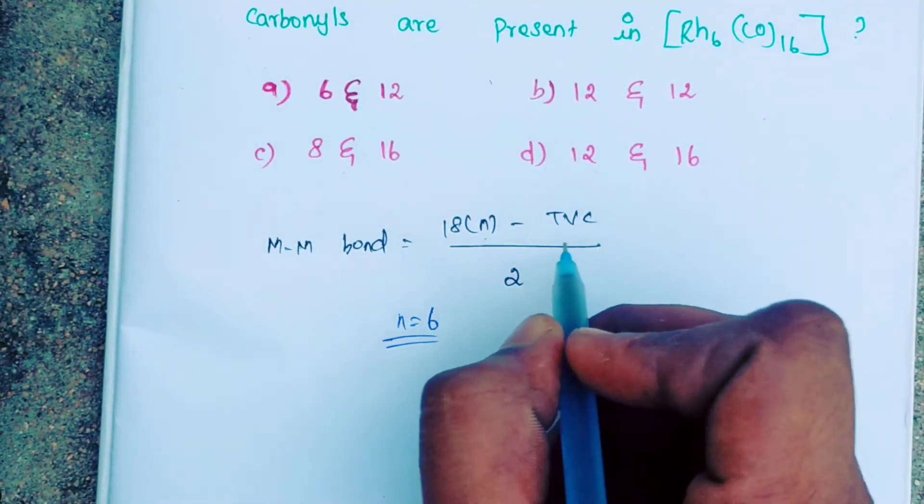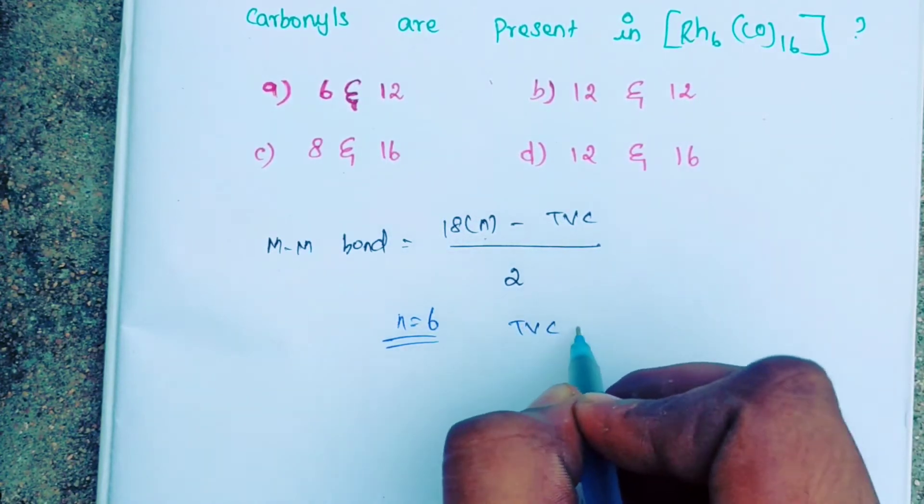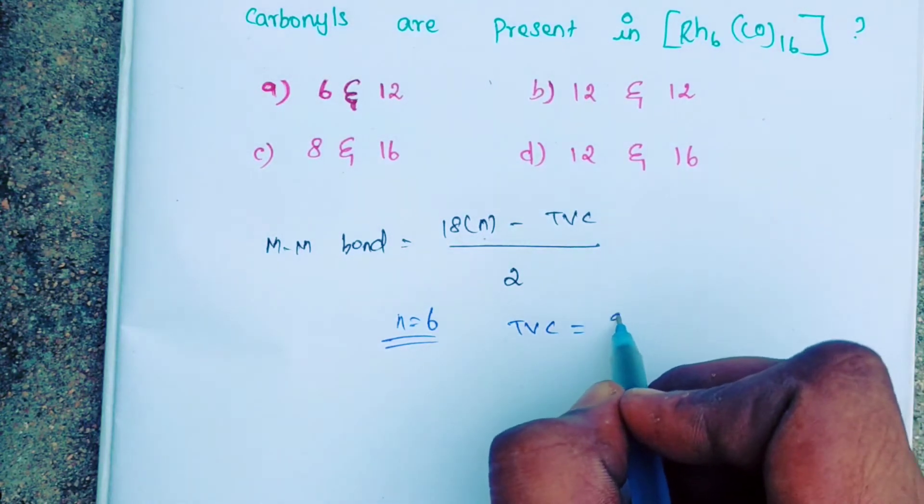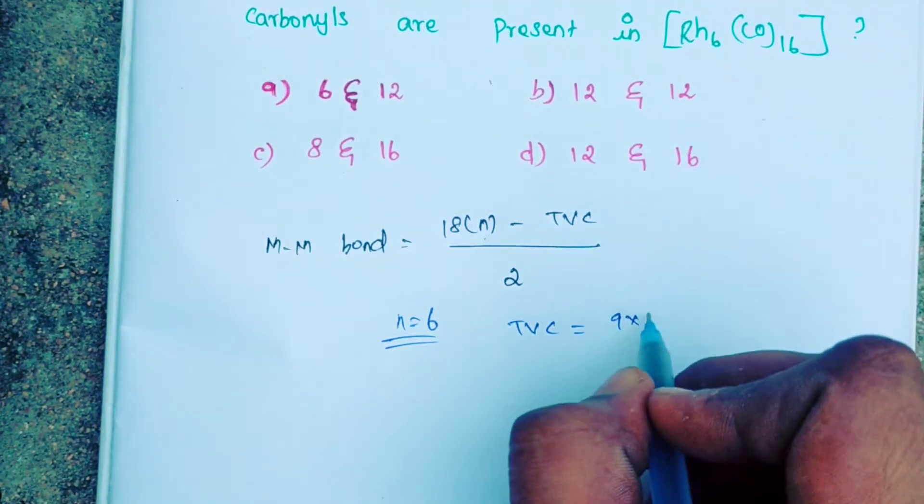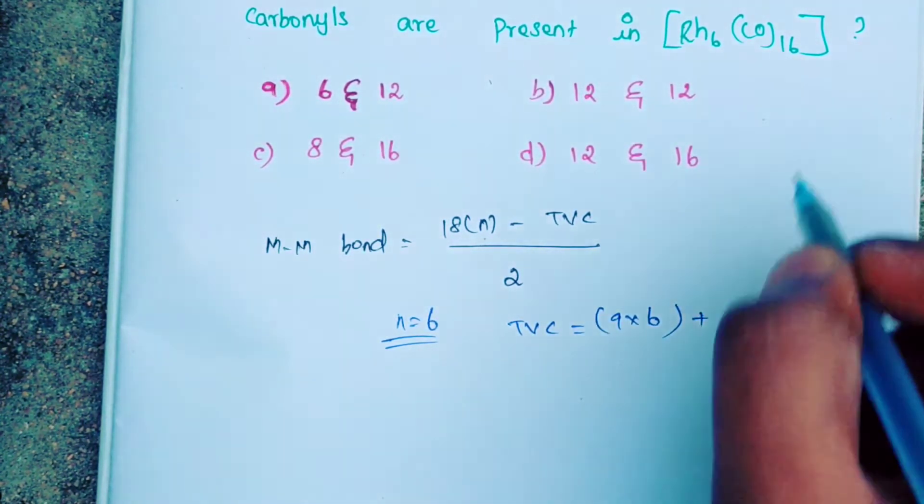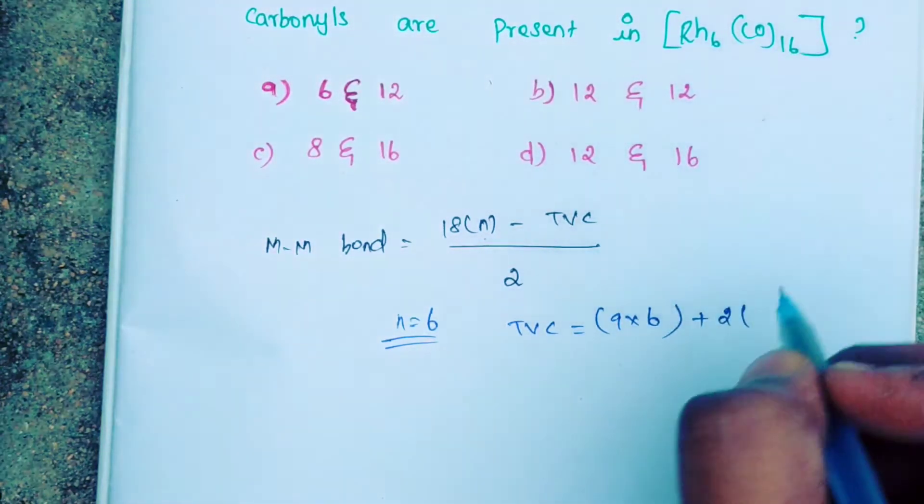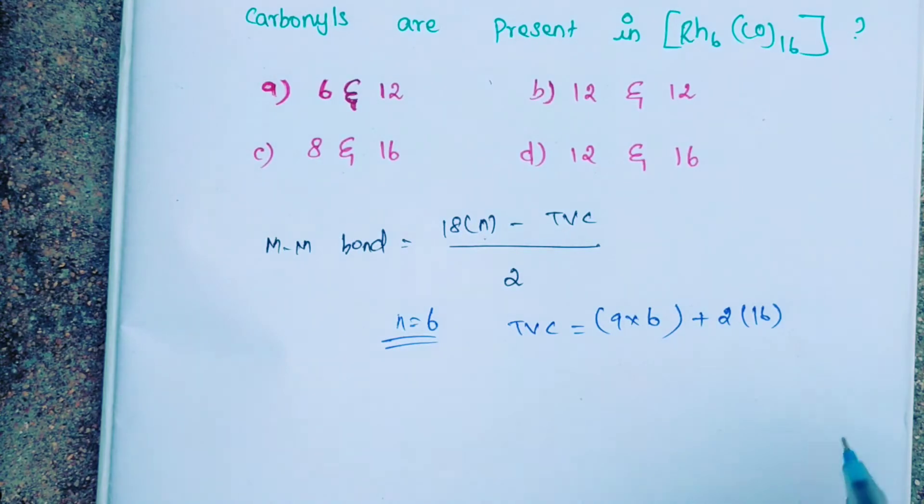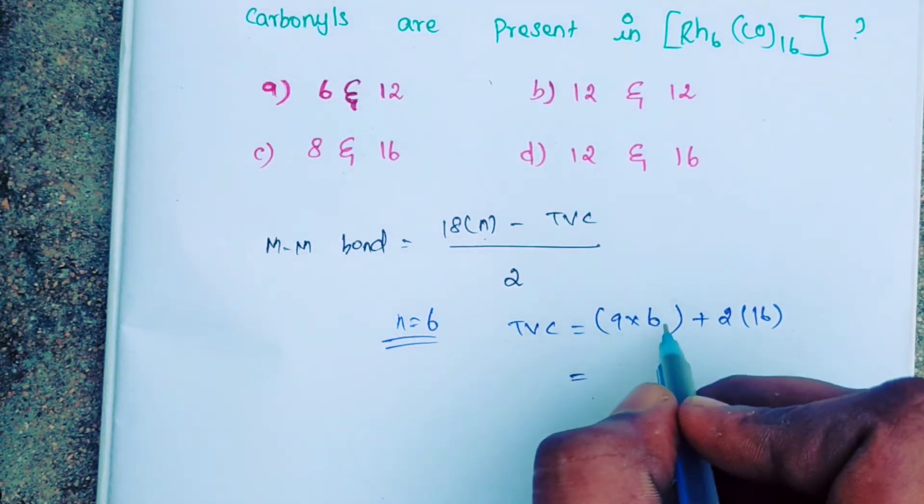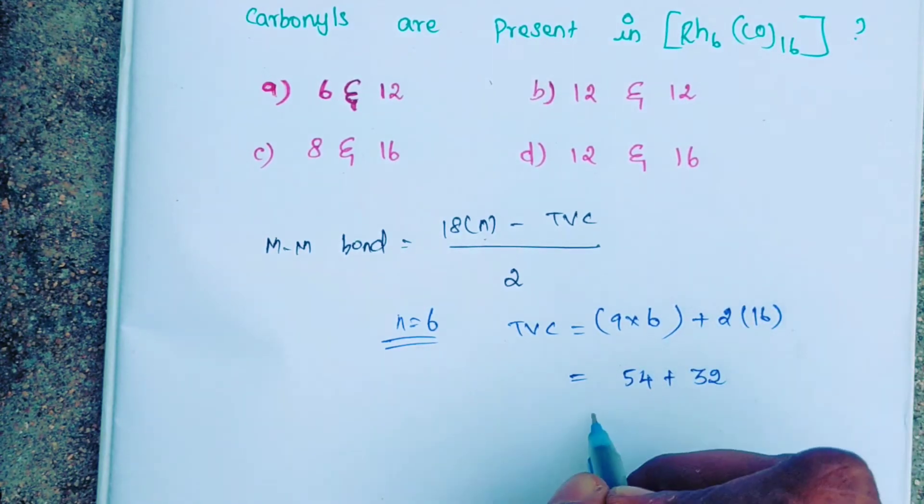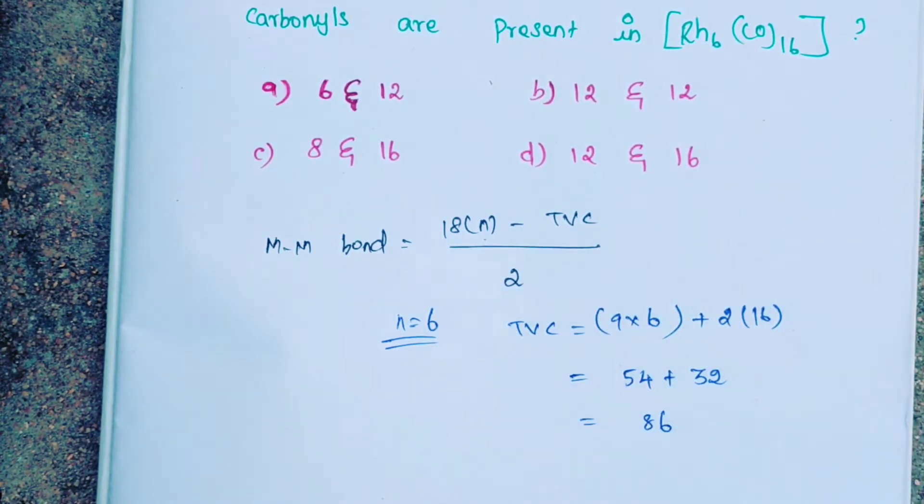Next, we find the total valence electron count. Rhodium's valence electron is 9, and the number of rhodium is 6. CO is a 2-electron donor, and there are 16 carbonyls. So we calculate: 9 times 6 is 54, plus 2 times 16 is 32. Adding these gives us 86 total valence electrons.